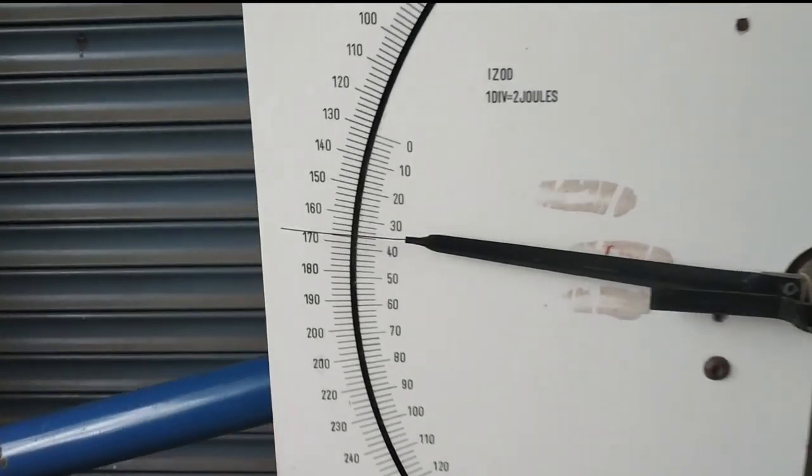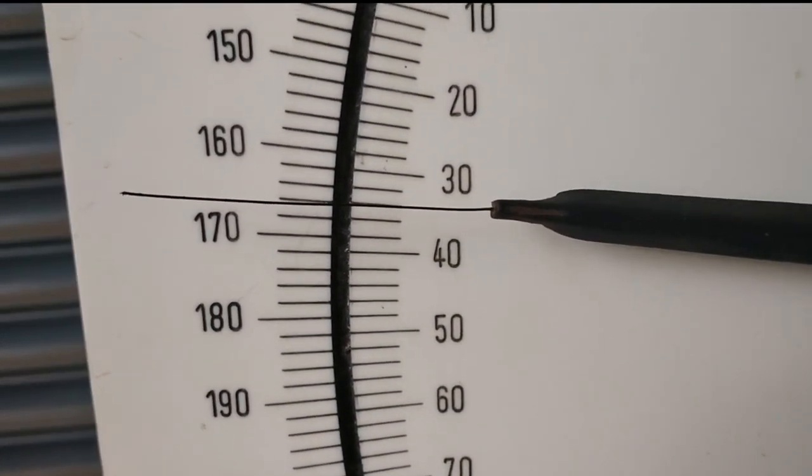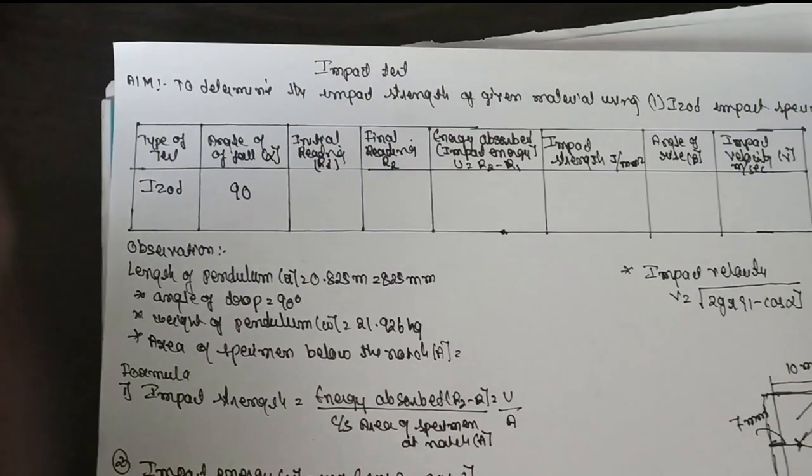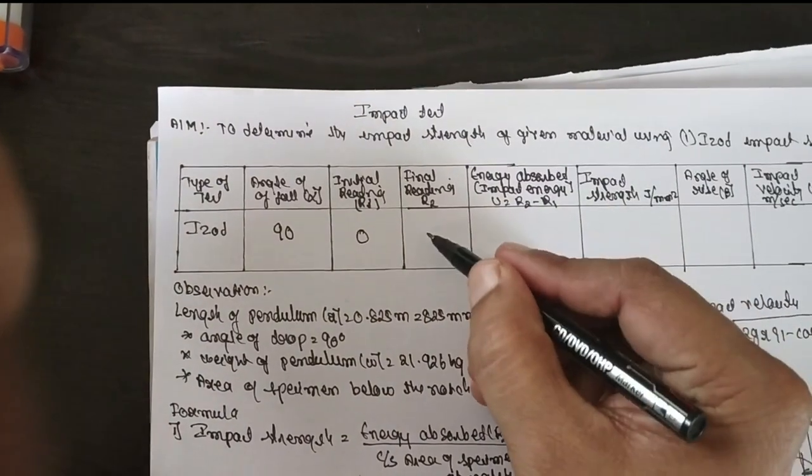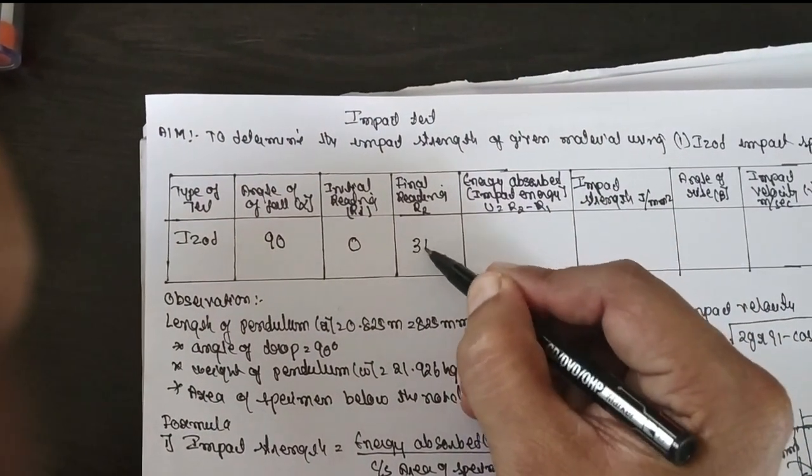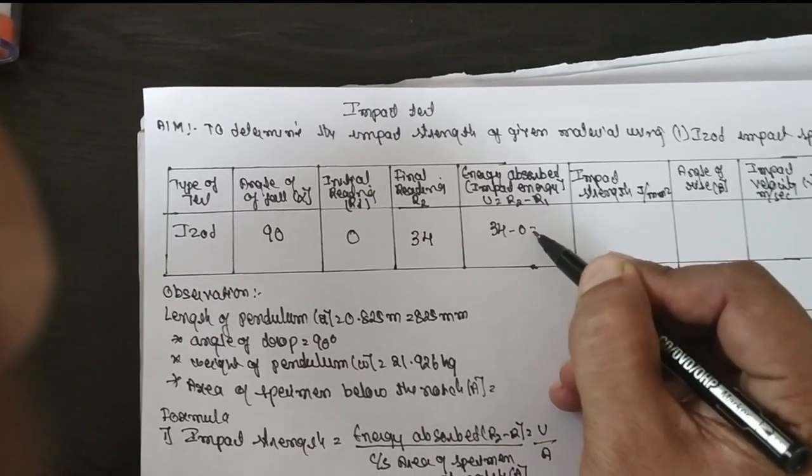The obtained value is... obtained value is 32, 34. The initial reading will be 0. The final reading is 34. 34 minus 0, it will be 34.